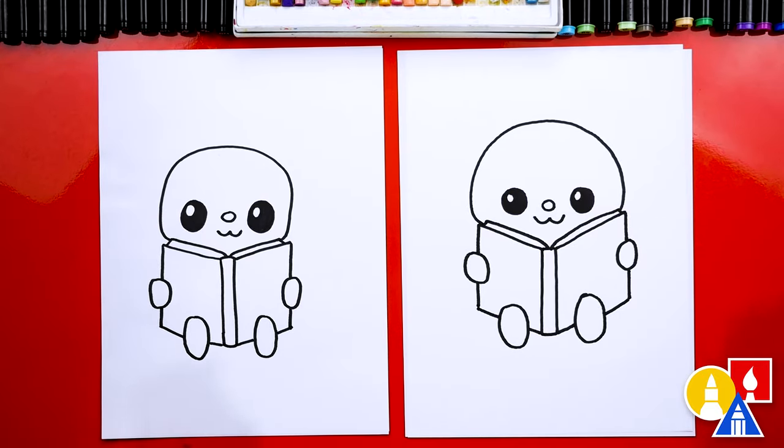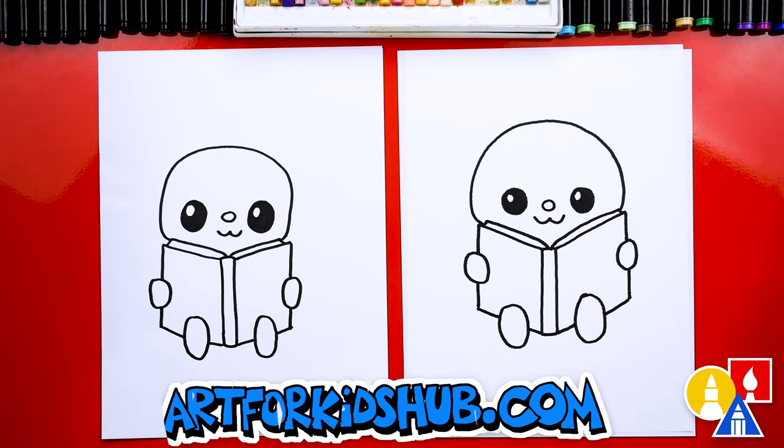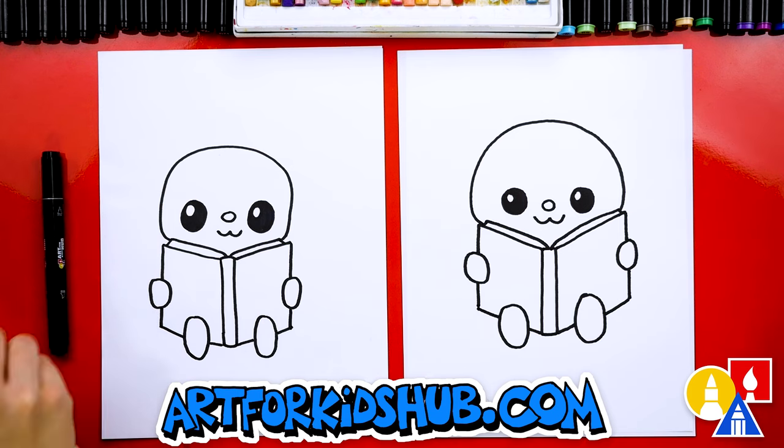We did it. We finished drawing our little character. We should come up with a name for him. Jefferson. Jefferson. Except we still need to do what? Color him. Yes. We need to color Jefferson.